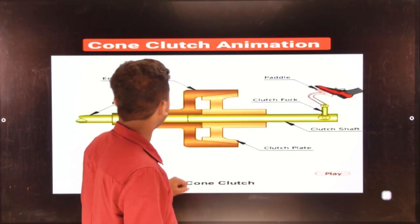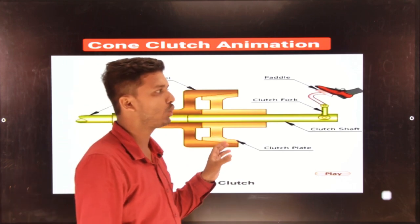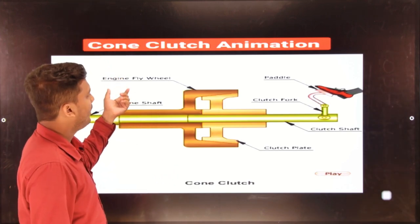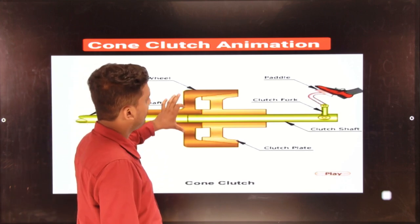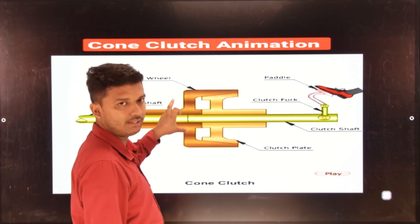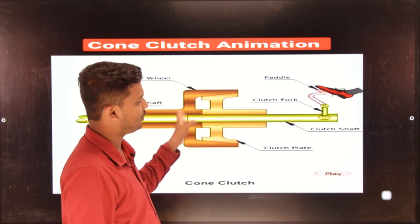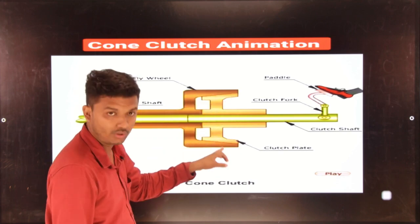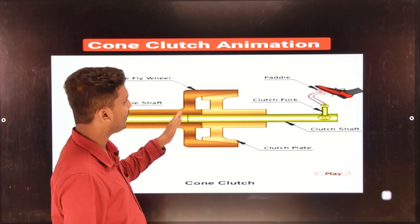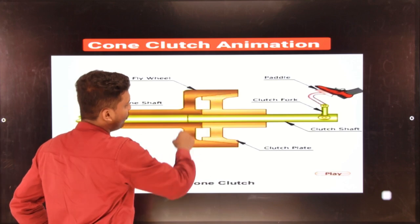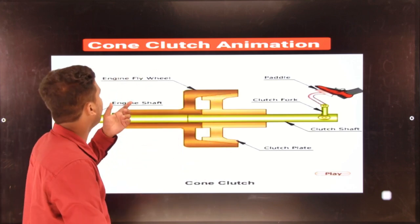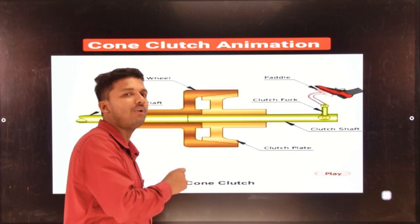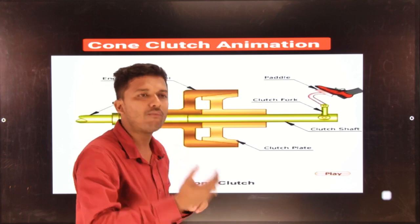Next we are going to look at this animation — a small video of the cone clutch working principle. Before that, we are going through the nomenclature. Here is the engine flywheel. One thing not completely defined in this picture or animation is that the flywheel is connected to the outer cone.